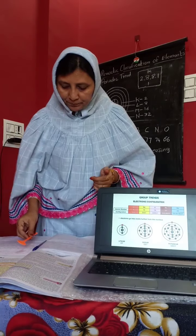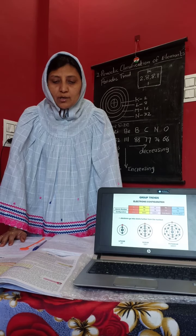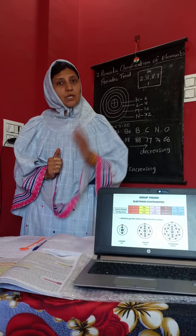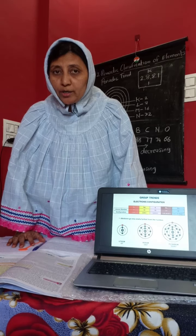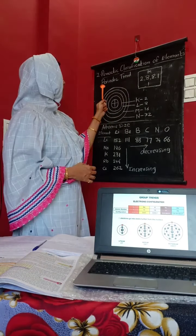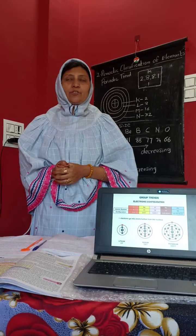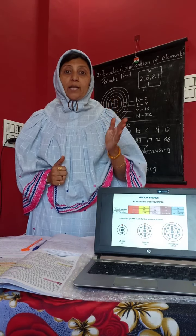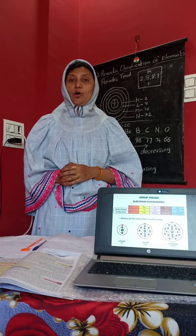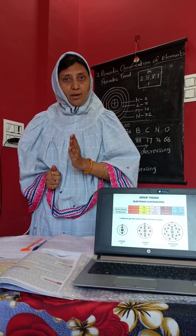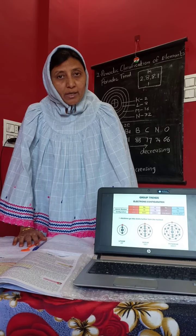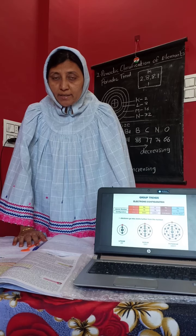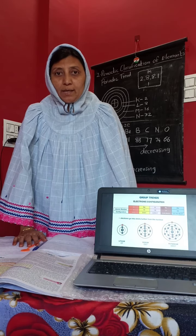Now we are going to see about periodic trends. A periodic trend is nothing but the increasing order of atomic number, name, and electronic configuration, then valency, and the metallic and non-metallic character. Every property of an element in a group and a period shows certain regularity between the elements, and that regularity is what we call the periodic trend.